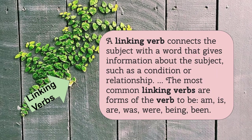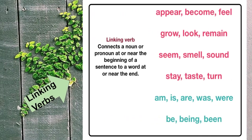A linking verb connects the subject with the word that gives information about the subject, such as a condition or relationship. The most common linking verbs are forms of the verb 'to be': am, is, are, was, were, being, been. A linking verb connects a noun or pronoun at or near the beginning of a sentence to a word at or near the end.